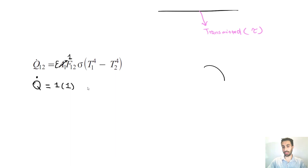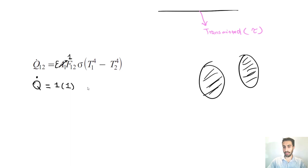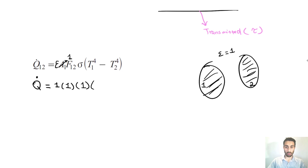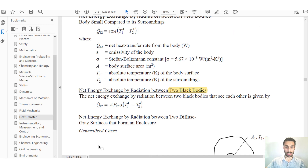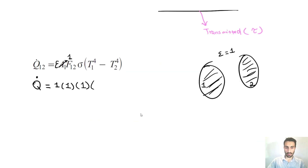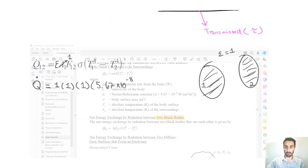If the area had been given, you would denote it for each body. In this case, area = 1 and view factor = 1. The Stefan-Boltzmann constant σ = 5.67 × 10⁻⁸ W/(m²·K⁴).